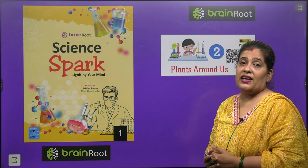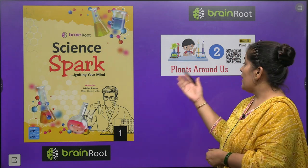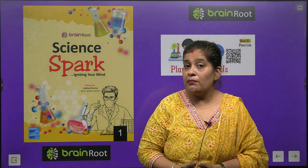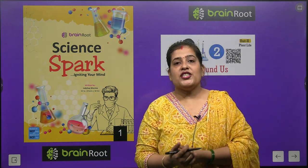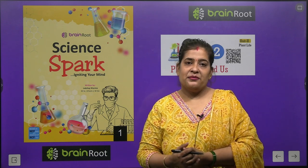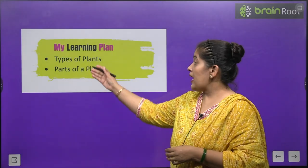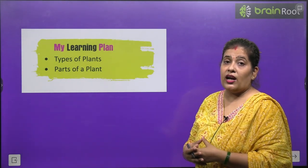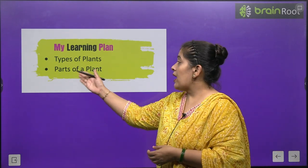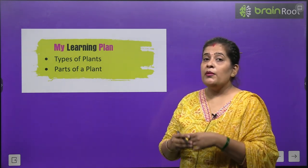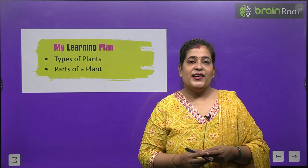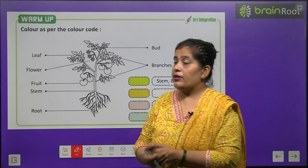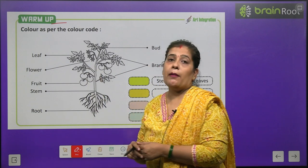Our chapter is called Plants Around Us — Plants means Peer Paudet. We will learn about plants which are around our four sides. In this chapter, you will learn about types of plants, how many different kinds of plants there are, and we will also learn about parts of a plant. Let's start our chapter. But before we start, we have to do a warm-up exercise.